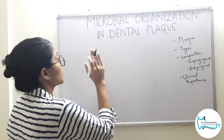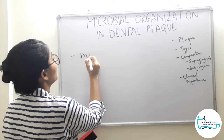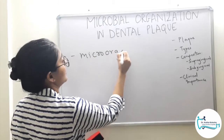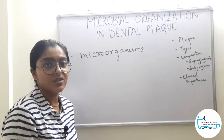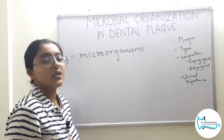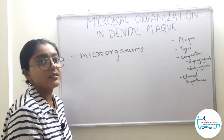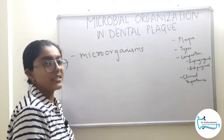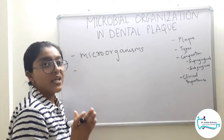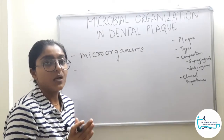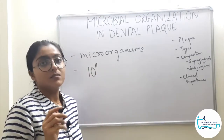Dental plaque is primarily composed of microorganisms, mainly bacteria. There are many other non-bacterial species — fungi, viruses, and protozoa. One gram of wet weight dental plaque may contain 10 raised to 11 bacteria.